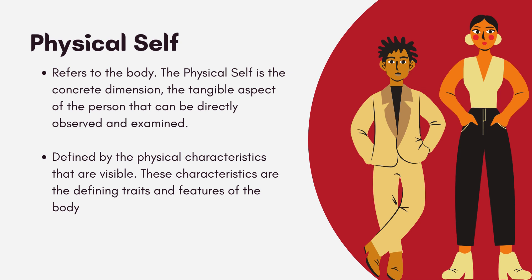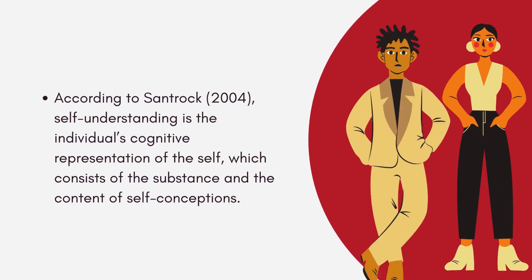The physical aspect of the self does not include characteristics that are internal, such as kindness, generosity, loyalty, obedience, and other similar qualities. To further understand the physical self, consider the meaning of self-understanding. According to Suntrop (2004), self-understanding is the individual's cognitive representation of the self — meaning this is how you think and how you view yourself, which consists of the substance and content of self-conceptions. The development of self-understanding in adolescence can be described from simple to complex and involves a number of aspects of the self.